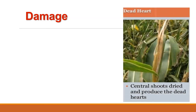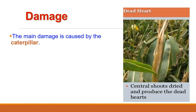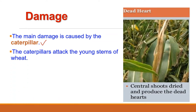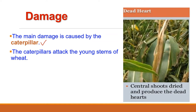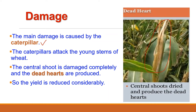It is very clear from the life cycle that the main damage is caused by the caterpillar. The larva is the damage-causing stage in the life cycle of Sesamia inferens. As it feeds on the shoot, the central shoot is damaged completely and dead hearts are produced. As they shift from shoot to shoot, they attack and kill young shoots, so the yield is reduced considerably.